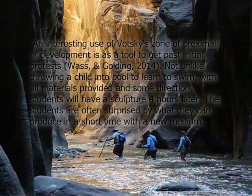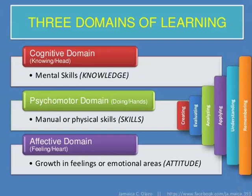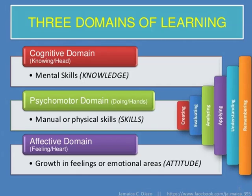The students are often surprised by what they can produce in a short amount of time with a new medium. Bloom's domains are applicable to fine art instruction by using the cognitive, psychomotor, and affective domains. The cognitive domain is shown by needing to remember specific names, anatomy structures, formulas for paints, and chemistry for printing, among other examples. The psychomotor domain is demonstrated by the ability to manipulate physical materials into objects that are not only visually appealing but have some meaning as well. That meaning is often part of the affective domain — the ability to feel, relate, and communicate, as evidenced by the piece of artwork created.